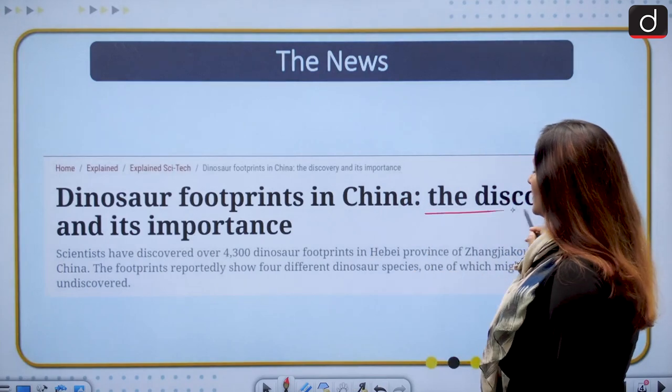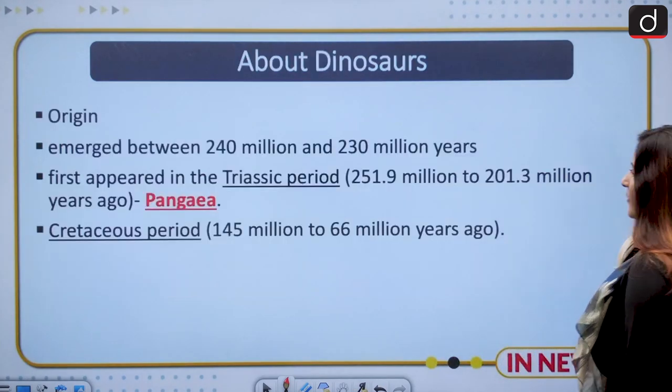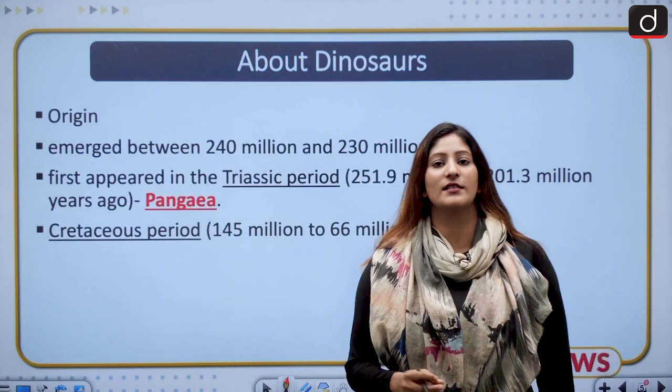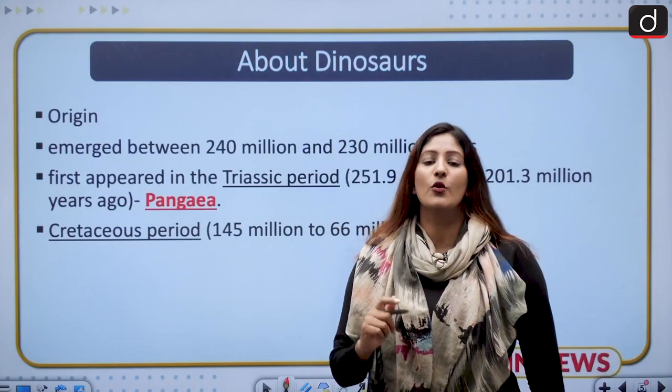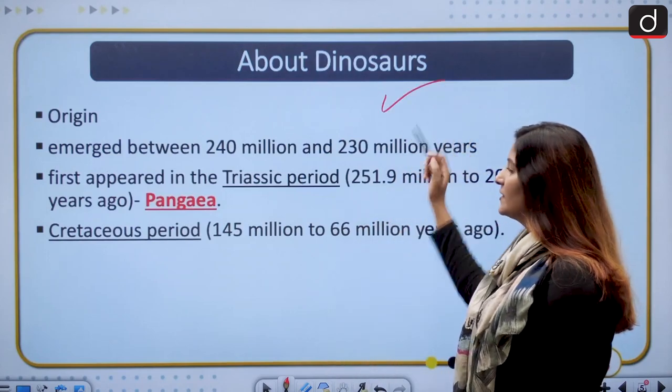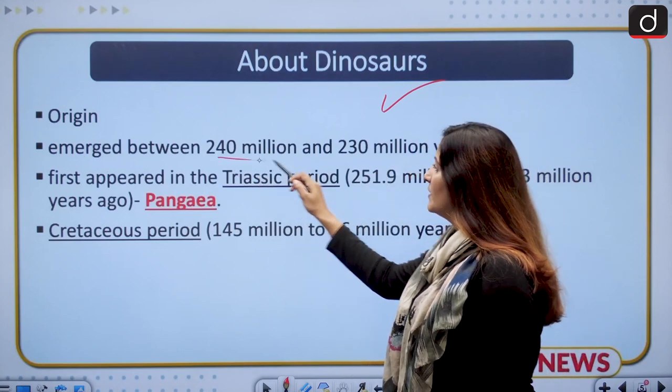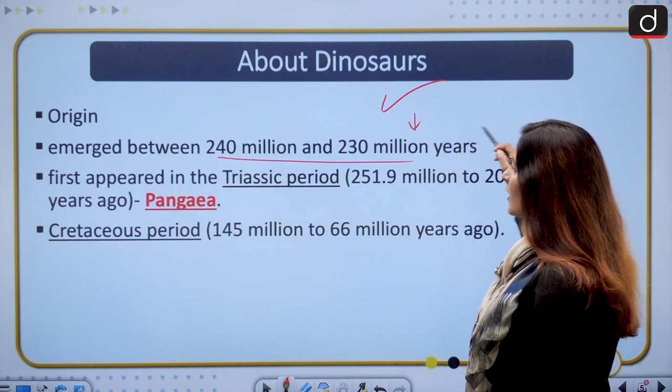So dinosaur footprints in China: discovery and its importance. Before discussing the discovery, we have to know about whom are we talking about. We are talking about dinosaurs, and their origin can be traced back to 240 million to 230 million years ago.